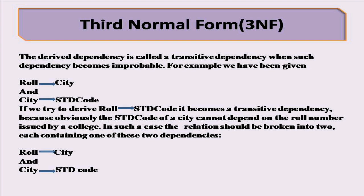Because obviously the STD code of a city cannot depend on the roll number issued by a college. In such a case, the relation should be broken into two, each containing one of these two dependencies: Role–City and City–STD Code.